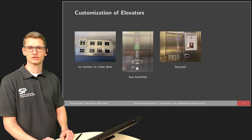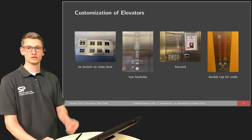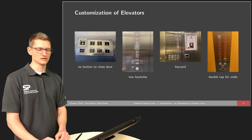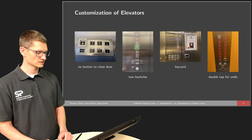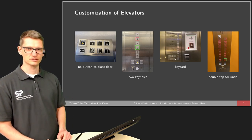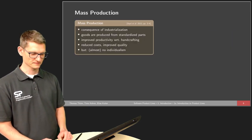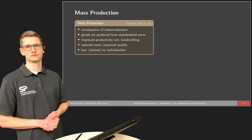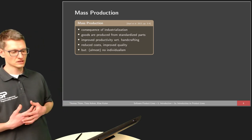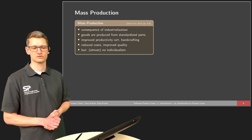Here we have an example with two keyholes — probably two different security levels unreachable by this elevator. Or we have a key card, a very frequent example in hotels. Or there's a very useful feature: once you press and activate a certain floor, you can deactivate it by doing a double-click — by pressing the button twice afterwards. Make sure you check that this feature is actually available before trying it. In contrast to customization, we have mass production — producing goods from standardized parts, a consequence of industrialization.